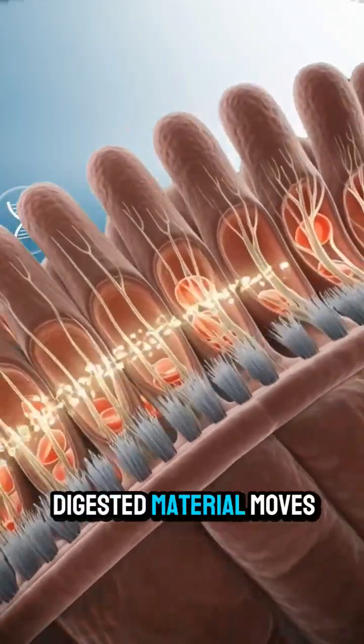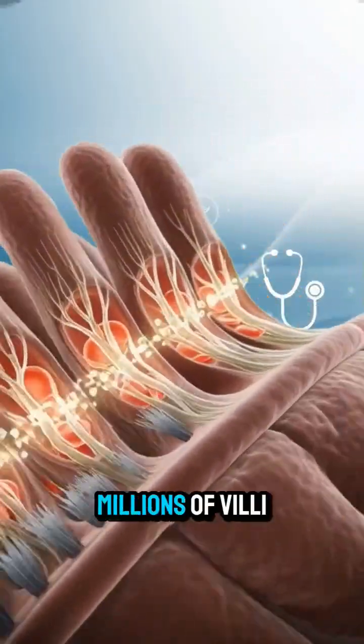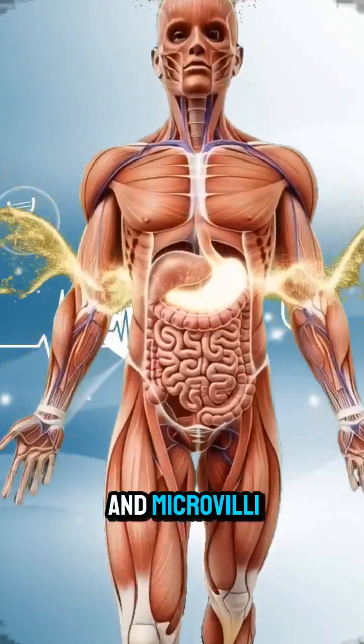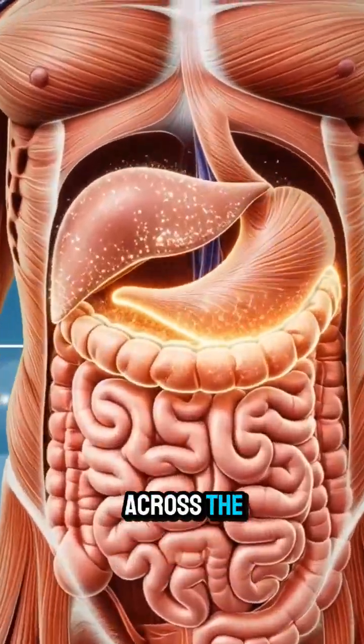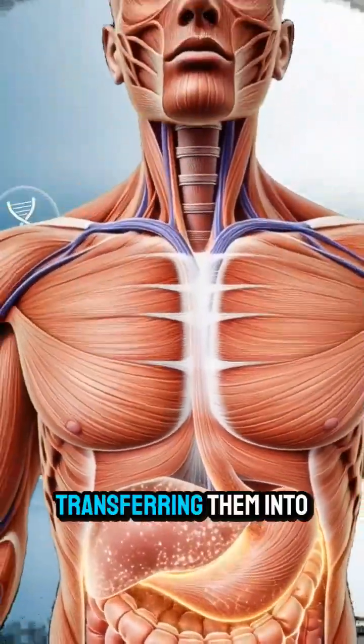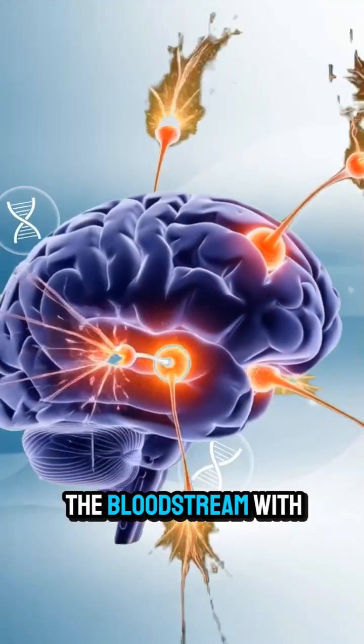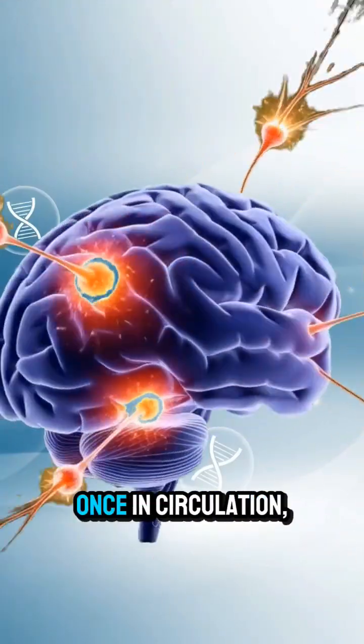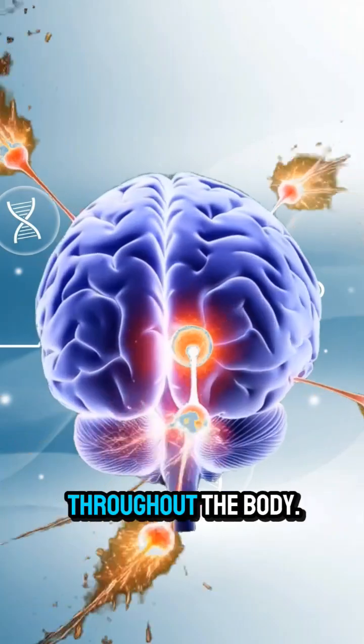As the partially digested material moves into the small intestine, millions of villi and microvilli begin pulling nutrients across the intestinal lining, transferring them into the bloodstream with remarkable efficiency. Once in circulation, these nutrients travel throughout the body.